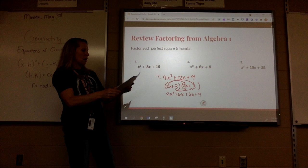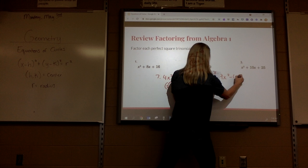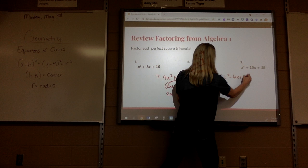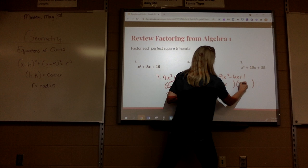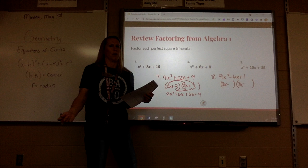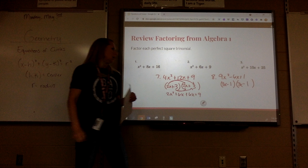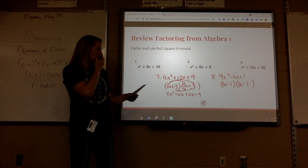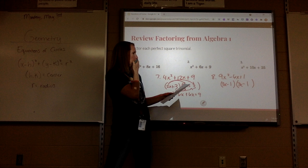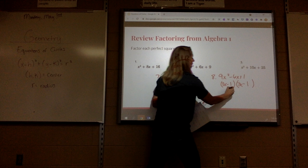Number 8 is 9x squared minus 6x plus 1. So 3x, 3x — what's the square root of 1? The square root of 1 is 1. So it'd just be 3x minus 1 squared.